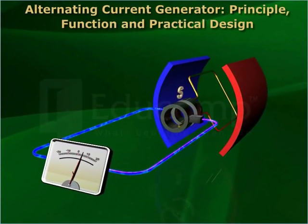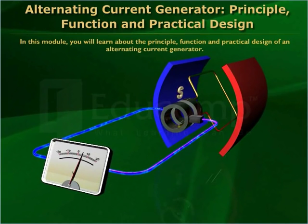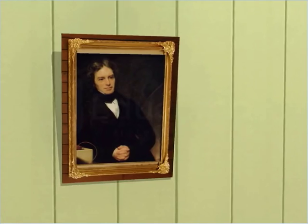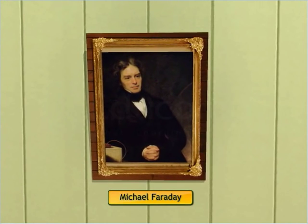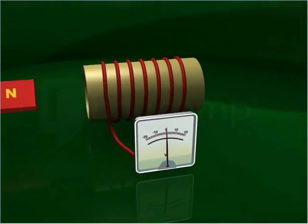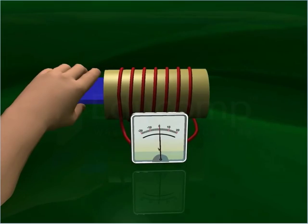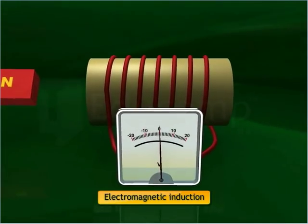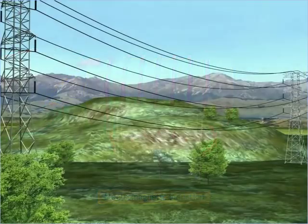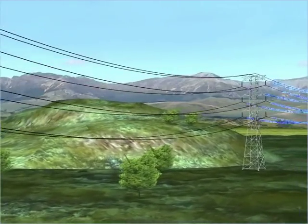Alternating current generator: principle, function, and practical design. In this module you learn about the principle, function, and practical design of an alternating current generator. English scientist Michael Faraday in 1831 experimentally demonstrated that a changing magnetic field can induce a current through a closed circuit. This phenomenon, called electromagnetic induction, became the key to the practical generation of electricity.